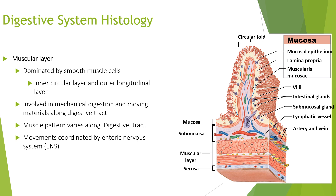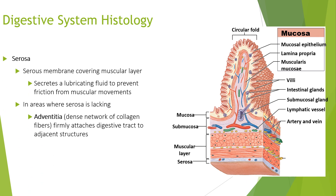The muscular layer is dominated by smooth muscle cells with an inner circular layer and an outer longitudinal layer. It is involved in mechanical digestion and moving materials along the digestive tract; movements are coordinated by the internal nervous system. The serosa is a serous membrane covering the muscular layer that secretes a lubricating fluid to prevent friction from muscular movements. Where the serosa is lacking, the adventitia — a dense network of collagen fibres — firmly attaches the digestive tract to adjacent structures.